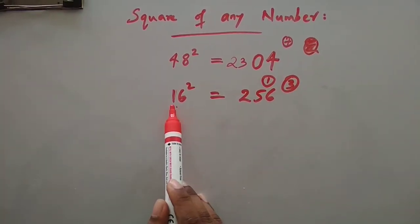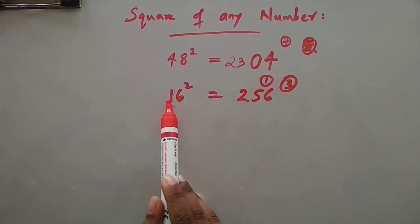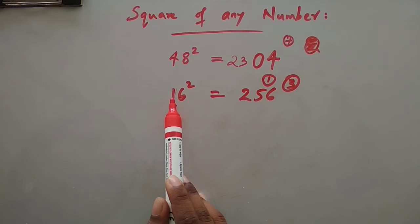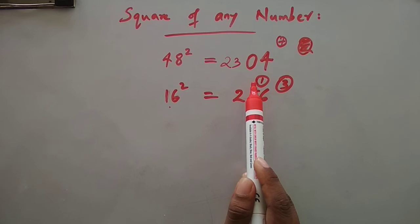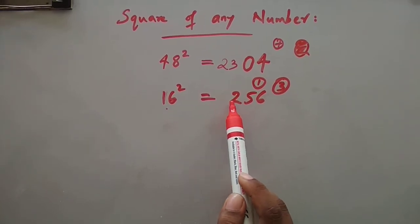Then we will write 5 here and 1 will be carried off. Then we have to find the square of this number, first number that is 1. 1 square is 1. Then we will add 1 to this 1, that is the carried of number. It will be 2. So the answer is 256.